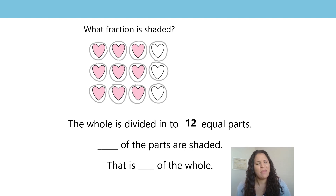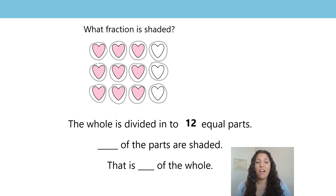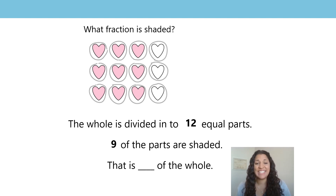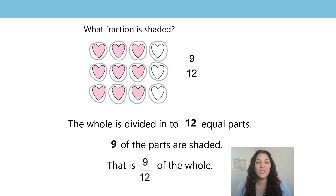How many of the parts are shaded? How many of the hearts are pink? I count 9 of the hearts are pink. So 9 of the parts are shaded — 9 of the hearts are shaded. That is 9 twelfths of the whole. 9 of the hearts are shaded in pink.